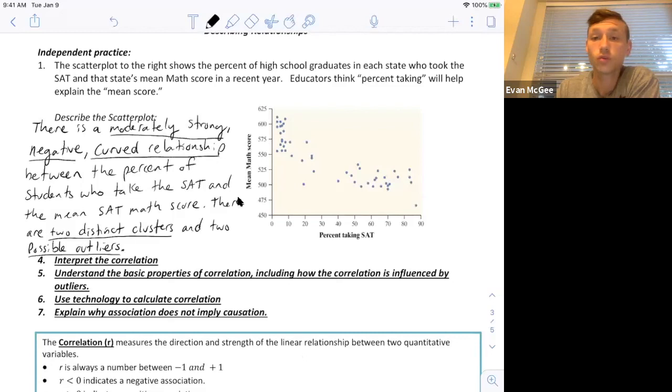The direction, form, and strength. Strength, mildly strong. Direction, negative. Form, curved. Because you can see it doesn't appear to be linear. Definitely looks to be curved. There seems to be two distinct clusters.